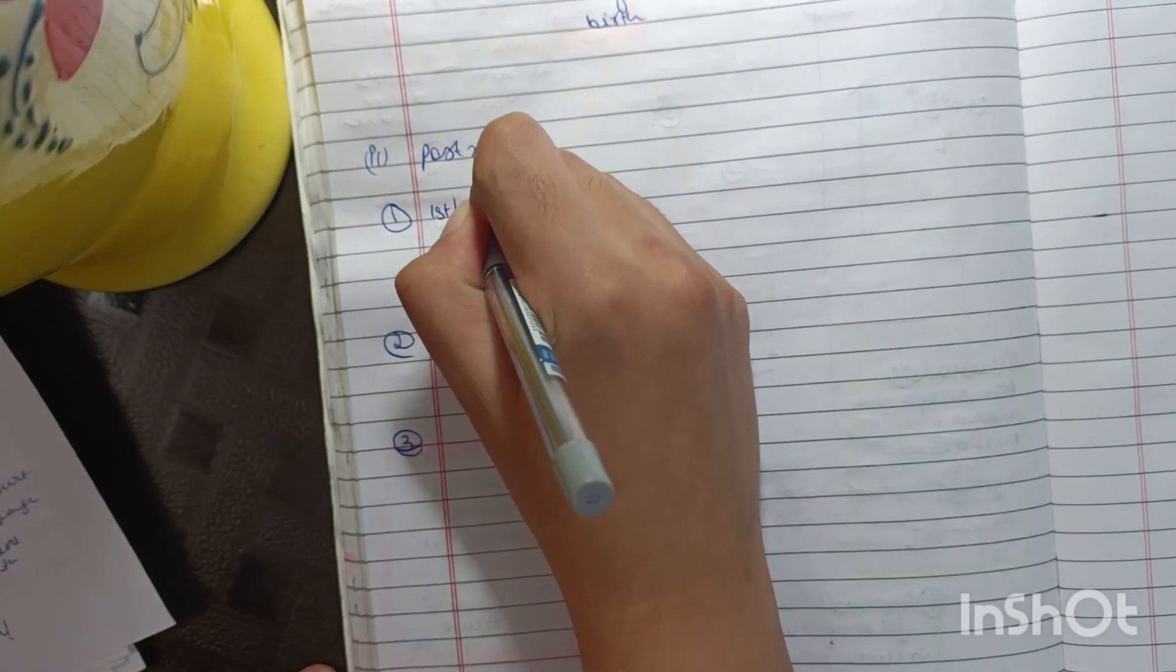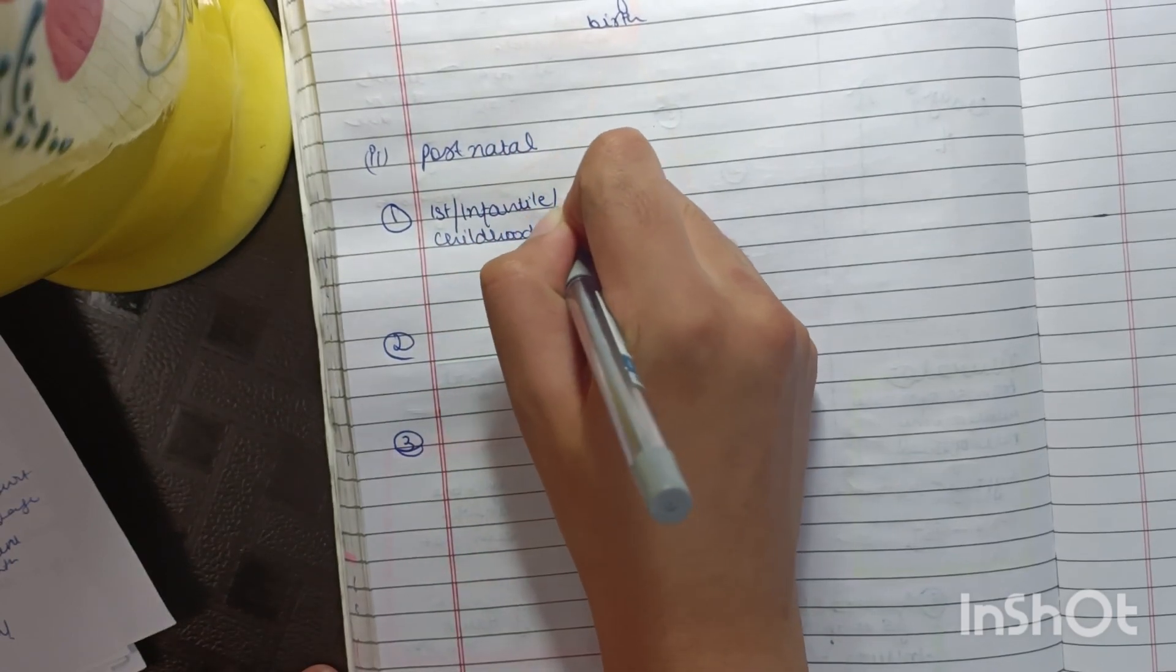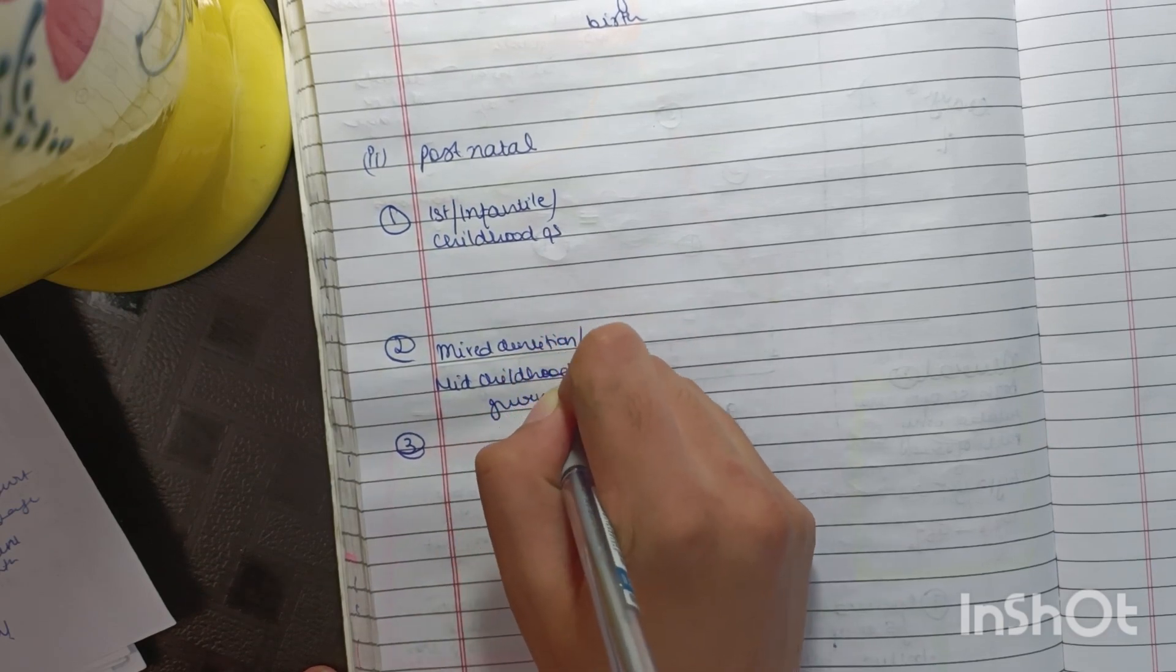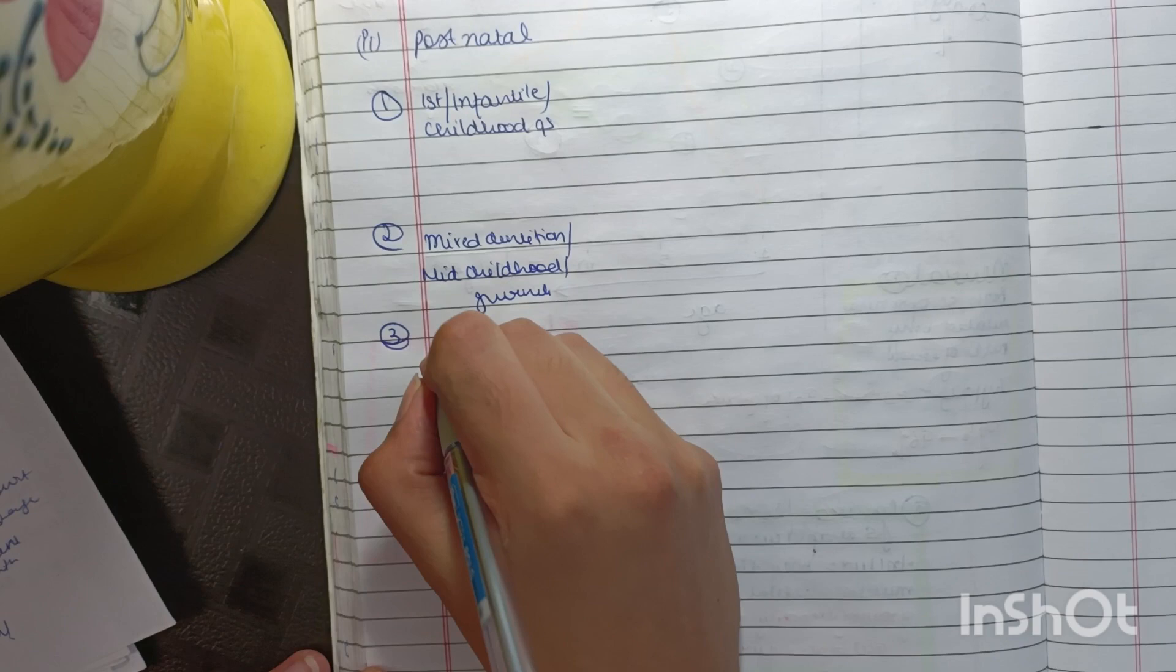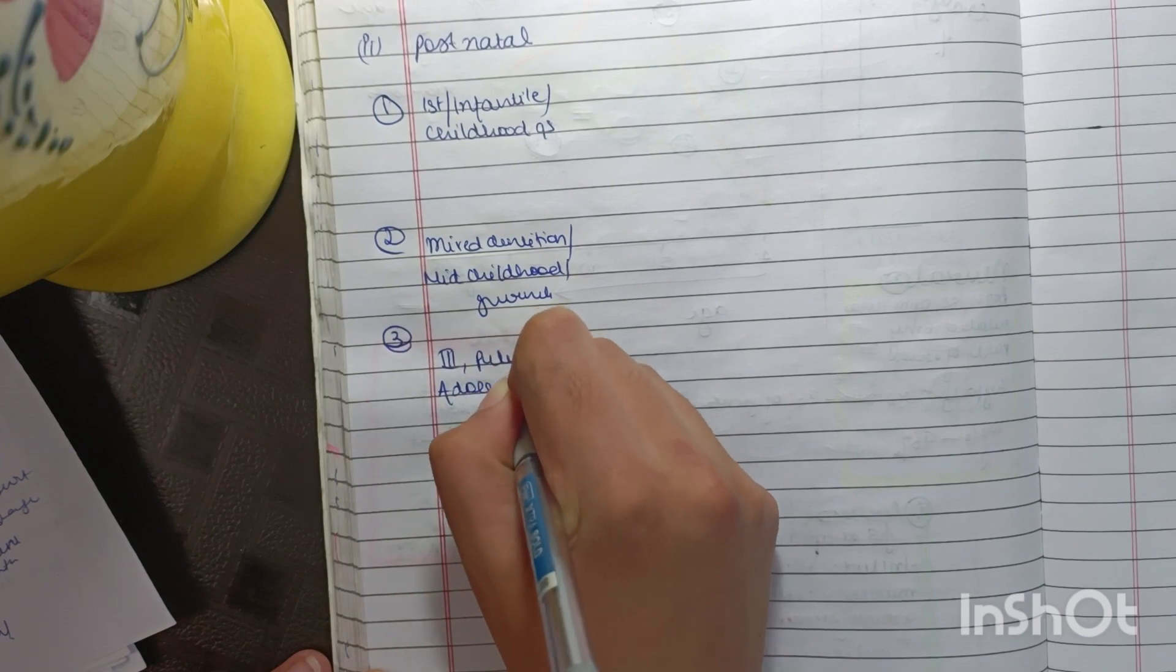The first one being infantile or childhood growth spurts. Second one being mixed dentition, mid-childhood, juvenile. Then third one being pubertal or adolescent growth spurts.